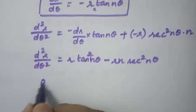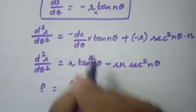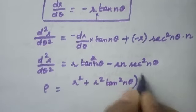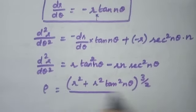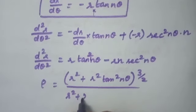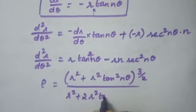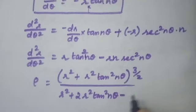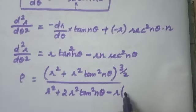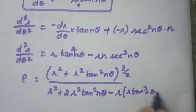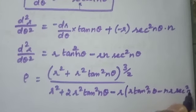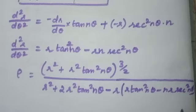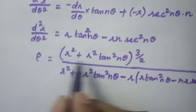Now substitute into the formula. ρ = [r² + r²·tan²(nθ)]^(3/2) divided by [r² + 2r²·tan²(nθ) − r·(r·tan²(nθ) − n·r·sec²(nθ))]. Factor out r² from the numerator.